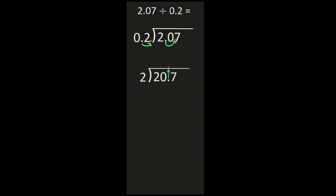Then we start with our steps of dividing, multiplying, subtracting, and bringing down if we need to. So 2 divided by 2 is 1. My 1 goes over the 2, then 1 times 2 is 2, and I subtract and get 0. Next I bring down a 0. Once I bring a number down I have to start with those division steps again. So 0 divided by 2 is 0, 0 times 2 is 0, and 0 minus 0 is 0.